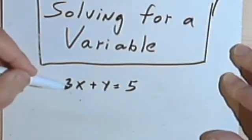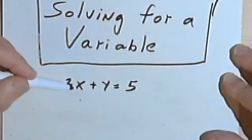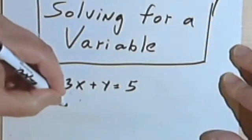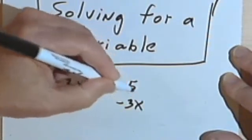So looking at this, 3x plus y equals 5, I want to get the 3x off of the left side of the equation. So what I'm going to do is subtract 3x. I have to subtract that from both sides.